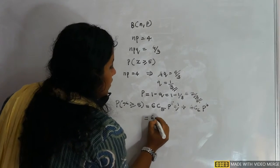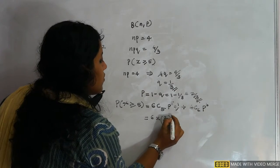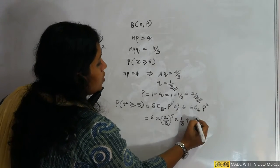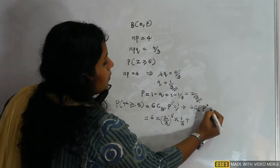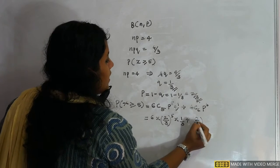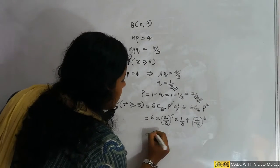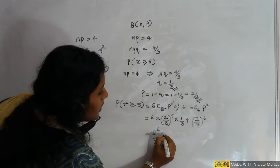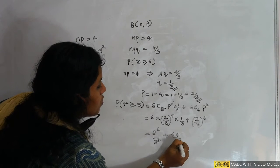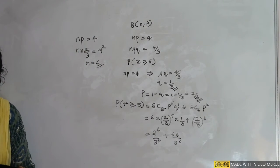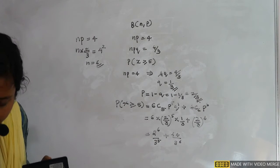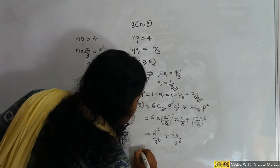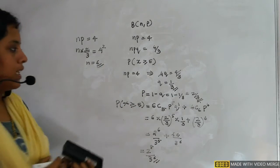Working it out: 6 × (2/3)^5 × (1/3) + (2/3)^6. This simplifies to 2^6/3^5 × 6/3^1 terms combining to yield 2^8 / 3^6. So the answer is 2^8 / 3^6, which is option D.